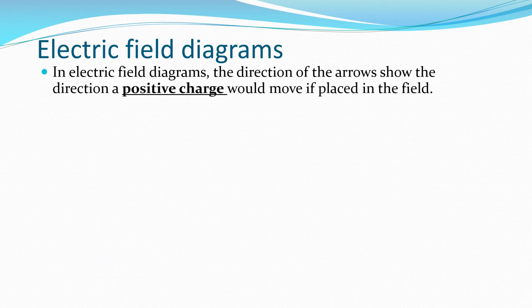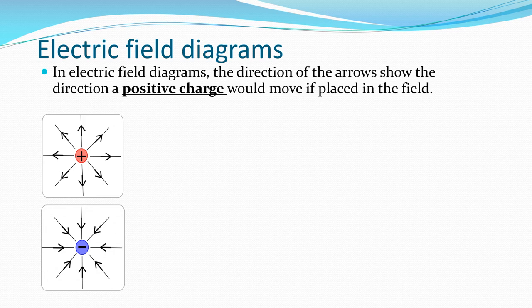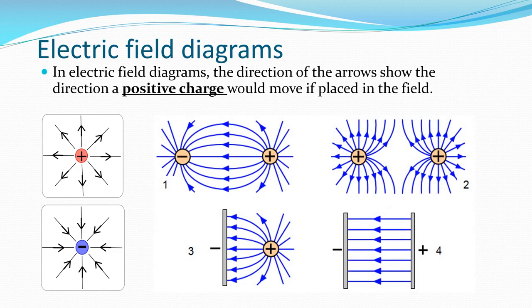Electric field diagrams. In electric field diagrams, the direction of the arrows shows the direction a positive charge would move if placed in the field. Around a positive point charge we see a radial field acting outward, as a positive point charge would be repelled from it. For a negative point charge, we see field lines going inward, as a positive charge would be attracted to it. You must also be able to describe and draw field lines between two opposite charges, two like charges, a point charge and a charged plate, and two charged plates. Diagram one shows the field between a positive and negative charge. Diagram two shows the field between two like charges. Diagram three shows a point charge and a charged plate. Diagram four shows two charged plates — our uniform field.